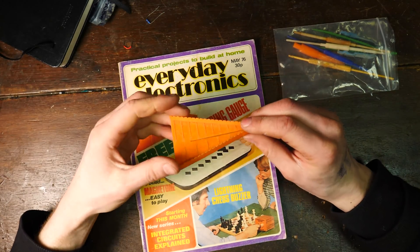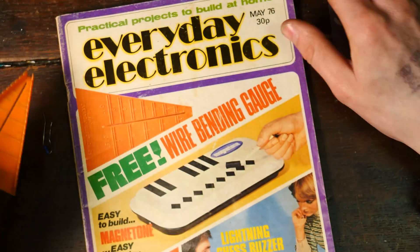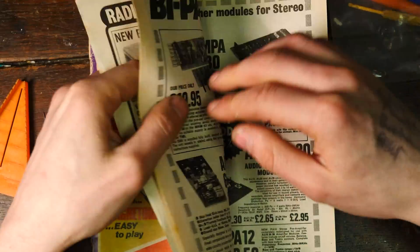The wire bending gauge of doom. That is amazing. So this is basically a wire bending gauge. In fact, I think it tells you how to use it in here. So we'll have a look.